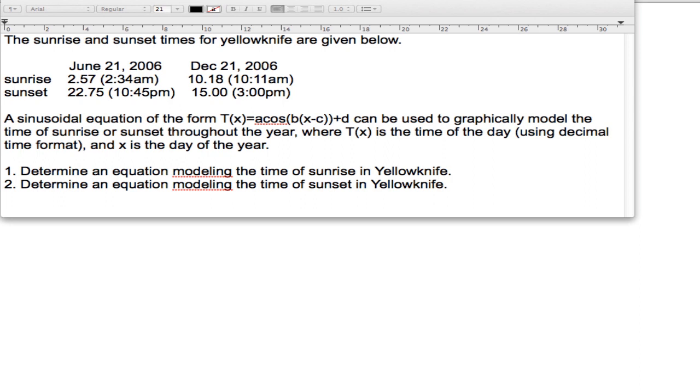A sinusoidal equation of the stated form can be used to graphically model the time of sunrise or sunset throughout the year, where T(x) is the time of the day using decimal time format, that's what we have, 2.57 instead of 2:34 a.m., and x is the day of the year. Question 1 and 2: Determine an equation modeling the time of sunrise in Yellowknife and determine an equation modeling the time of sunset in Yellowknife.